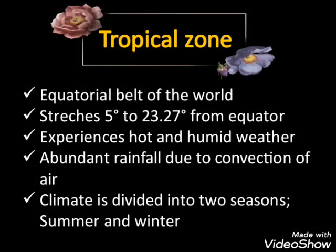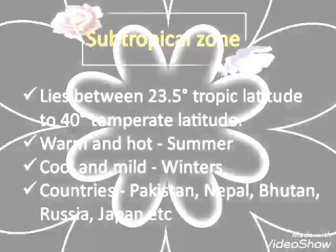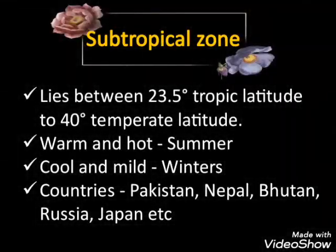The tropical zone is the equatorial belt of the world. It stretches from 5 degrees to 23.27 degrees on both sides of the equator. The climate here is divided into two seasons: summer and winter. Tropical climate experiences hot and humid weather, with abundant rainfall due to convection of air.